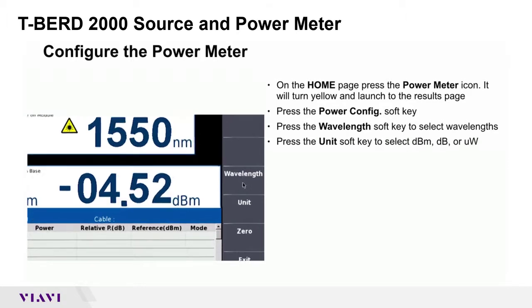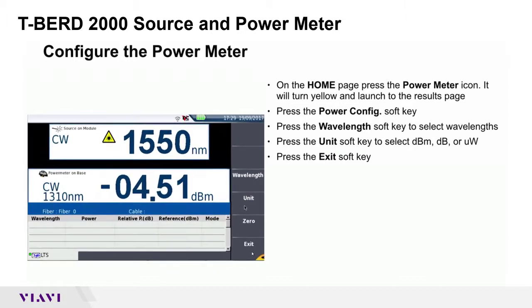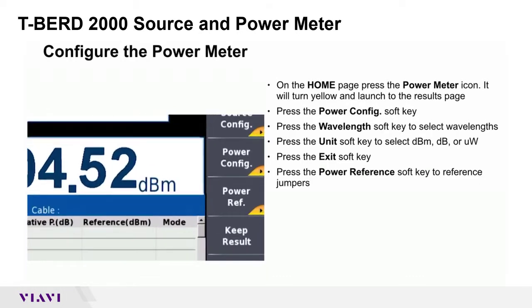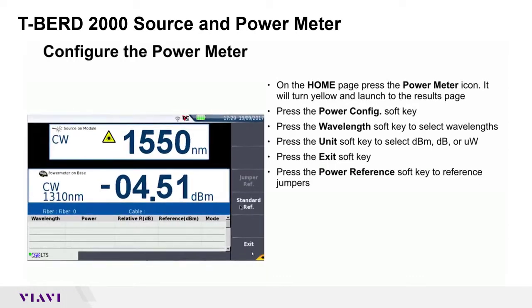Press the Unit soft key to select dBm, dB, or microwatts. Press the Exit soft key. Press the Power Reference soft key to reference jumpers.